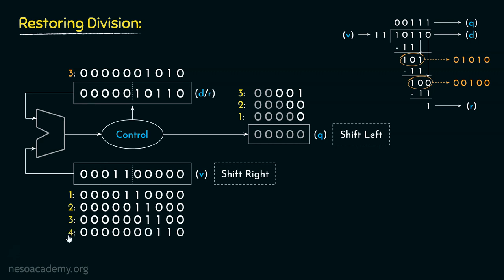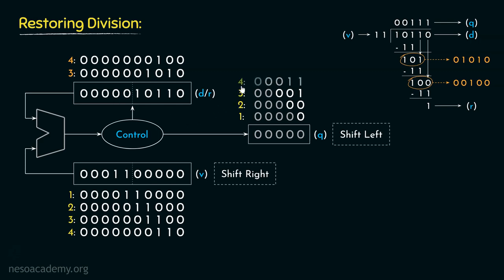Coming to iteration 4, we shift the content of V towards the right once more. The content of DR is 01010, that is 10, and V is 00110, that is 6. The subtraction is possible and the outcome is 00100, which we use to update DR. Since the result is positive, by the end of the fourth iteration we shift all bits of Q left and update the LSB with 1.